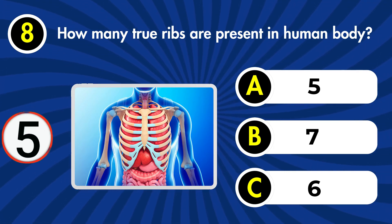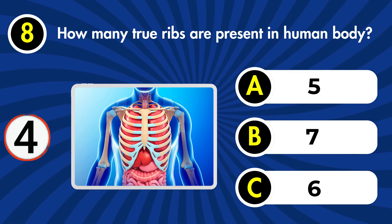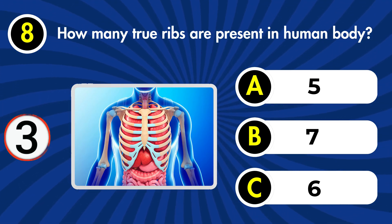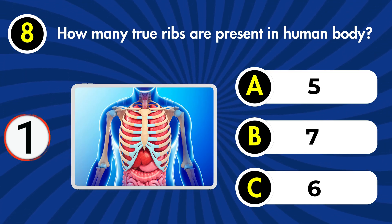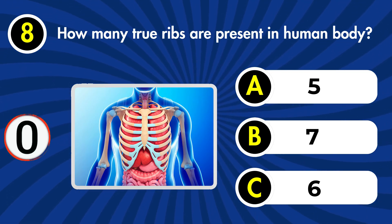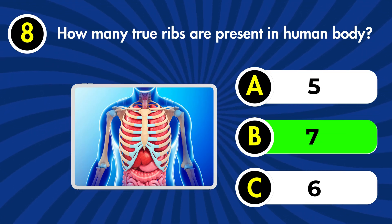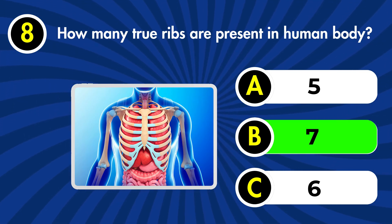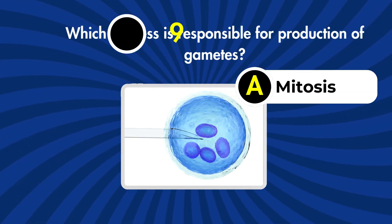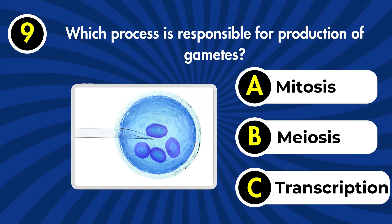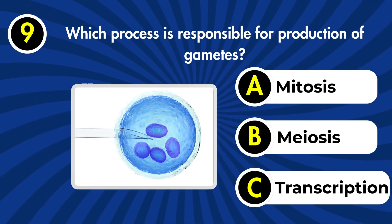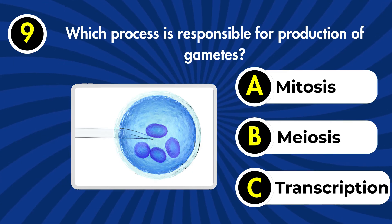Next question: how many true ribs are present in the human body? a) 5, b) 7, c) 6. Correct answer: b) 7.